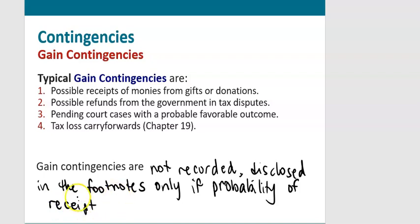So if we are very, very likely to receive some cash in the future, we still don't book the journal entry, but we do write in the footnotes that we're likely to receive this amount of money, maybe give the range of the amount, and explain why.